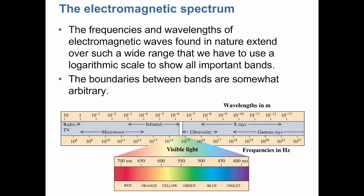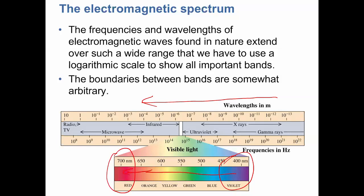The wavelength increases going from violet toward red, so violet has a shorter wavelength than red. Frequency goes in the opposite direction — frequency of red is less than frequency of violet, where wavelength of red is greater than wavelength of violet. When different frequencies enter our eyes, we perceive different colors because our eyes are sensitive to the frequency of the light.